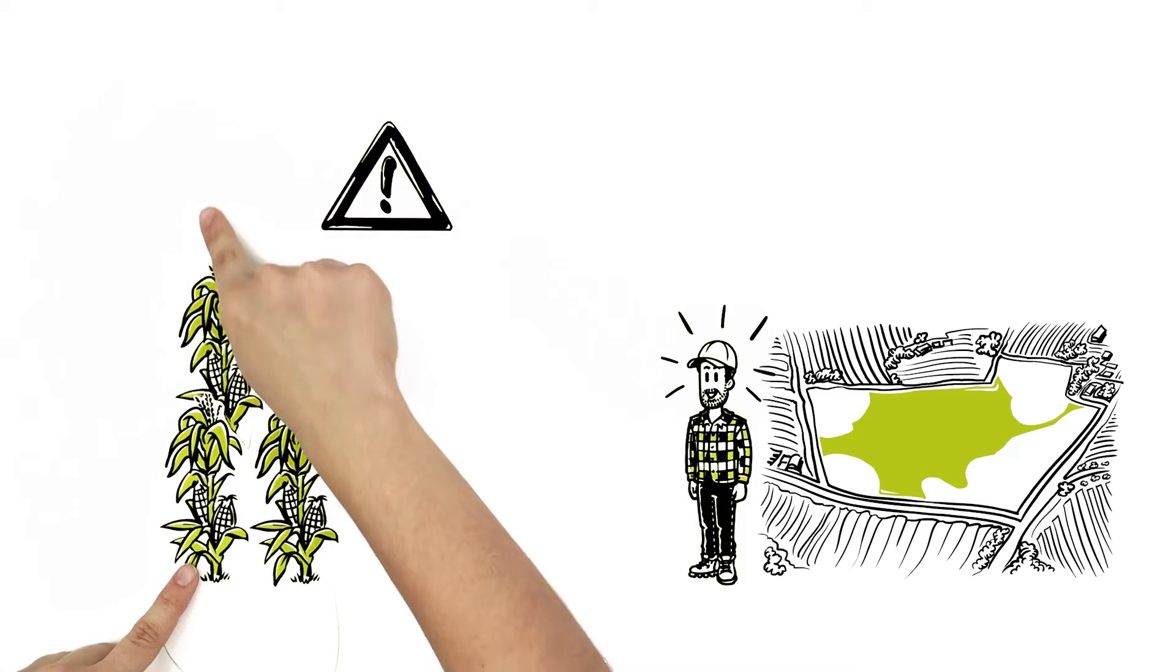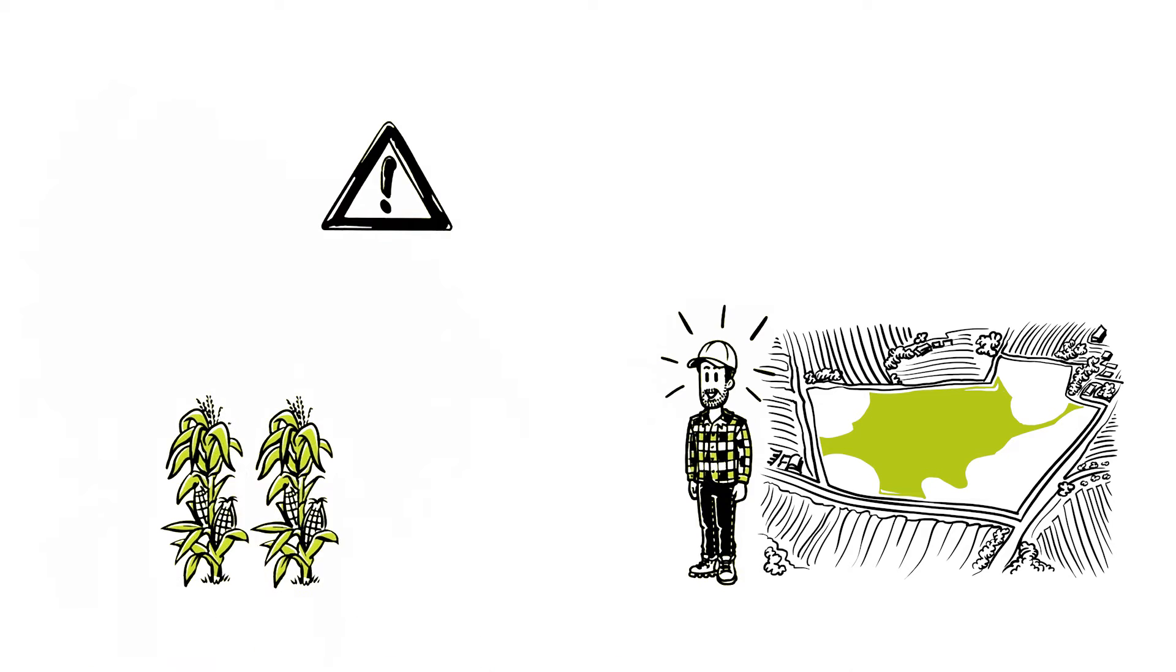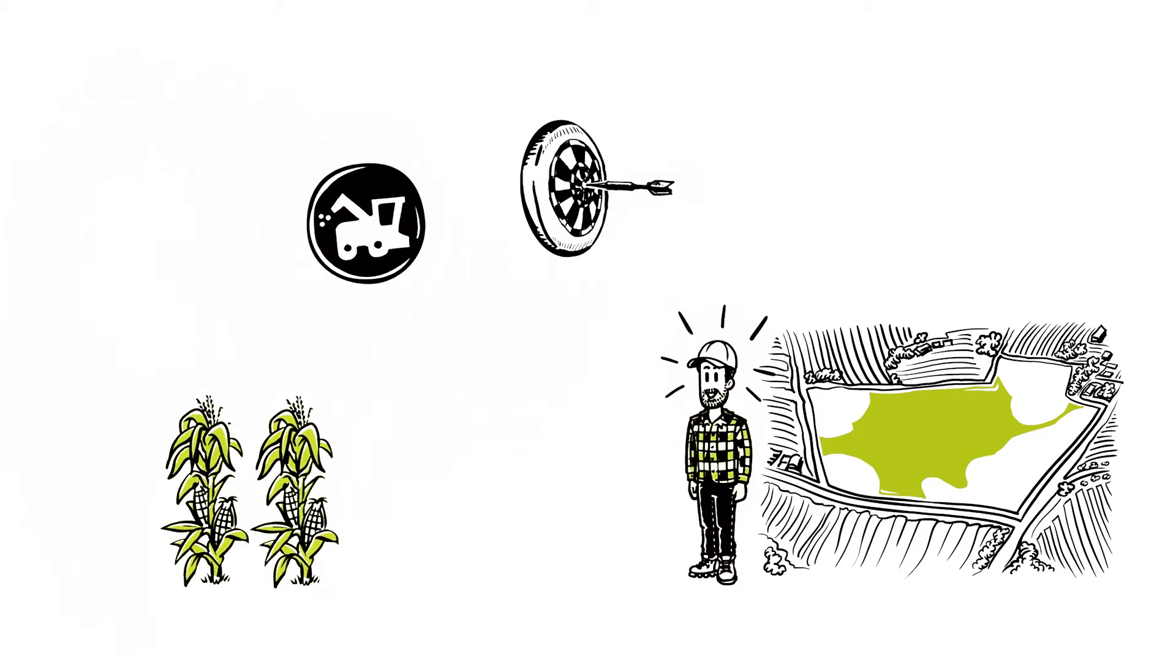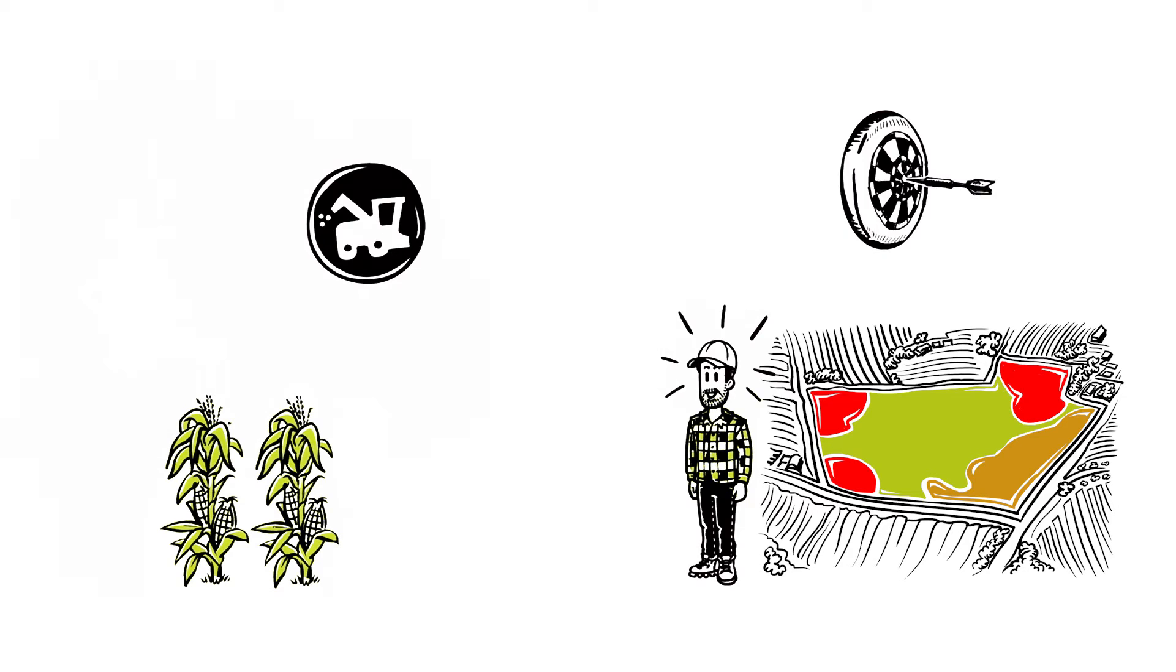You see, when Luke's goal was uniform growth throughout his fields, his harvester only needed to accommodate consistent conditions. But to truly take advantage of the changes from zone to zone, Luke needs dynamic harvesting equipment that works efficiently throughout his fields.